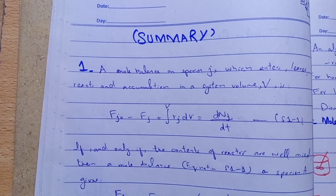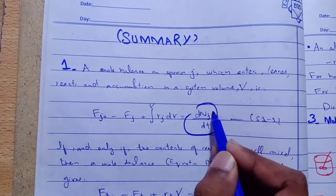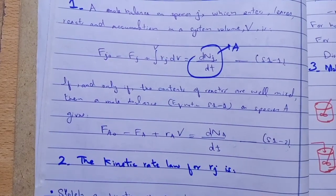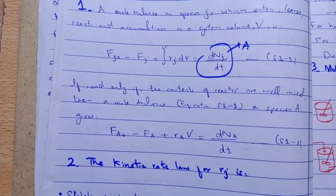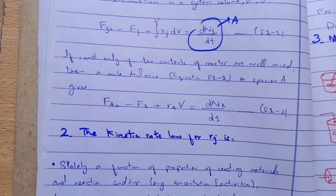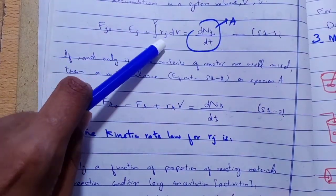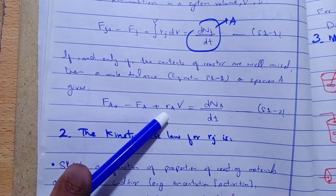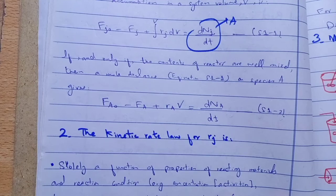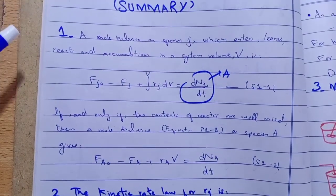If and only if the contents of reactor are well mixed, then a mole balance equation of species j changes into ∫rj dV = rj V. If the contents of the reactant are well mixed, so basically this is the first concept of lectures six and seven.